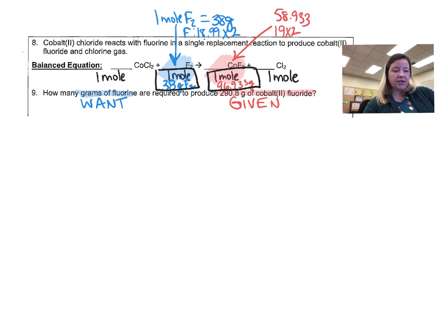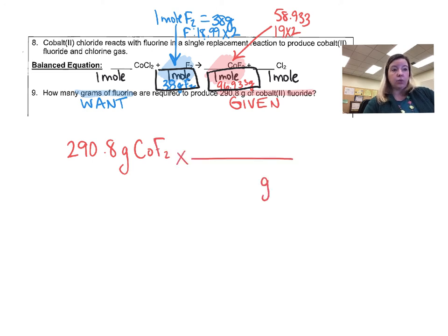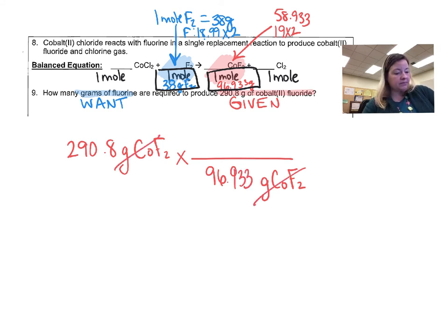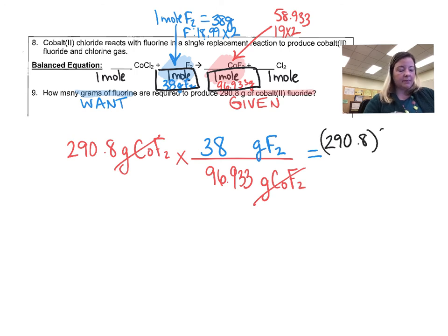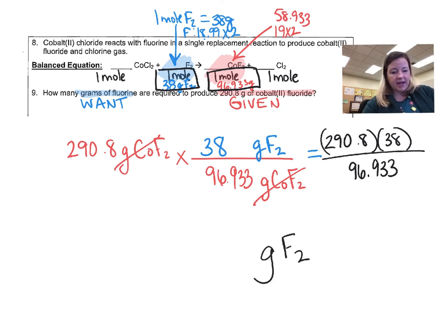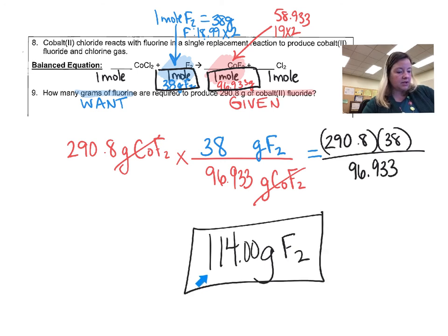I start with what I'm given — 290.8 grams of cobalt fluoride. Since I don't want cobalt fluoride it goes on the bottom: one mole is 96.933 grams, that cancels out. On the top I want grams of F₂ — well according to the balanced equation I need one mole of F₂ and one mole weighs 38 grams. So: 290.8 times 38 divided by 96.933 gives me about 114 grams of fluorine needed to react and produce 290.8 grams of cobalt(II) fluoride.